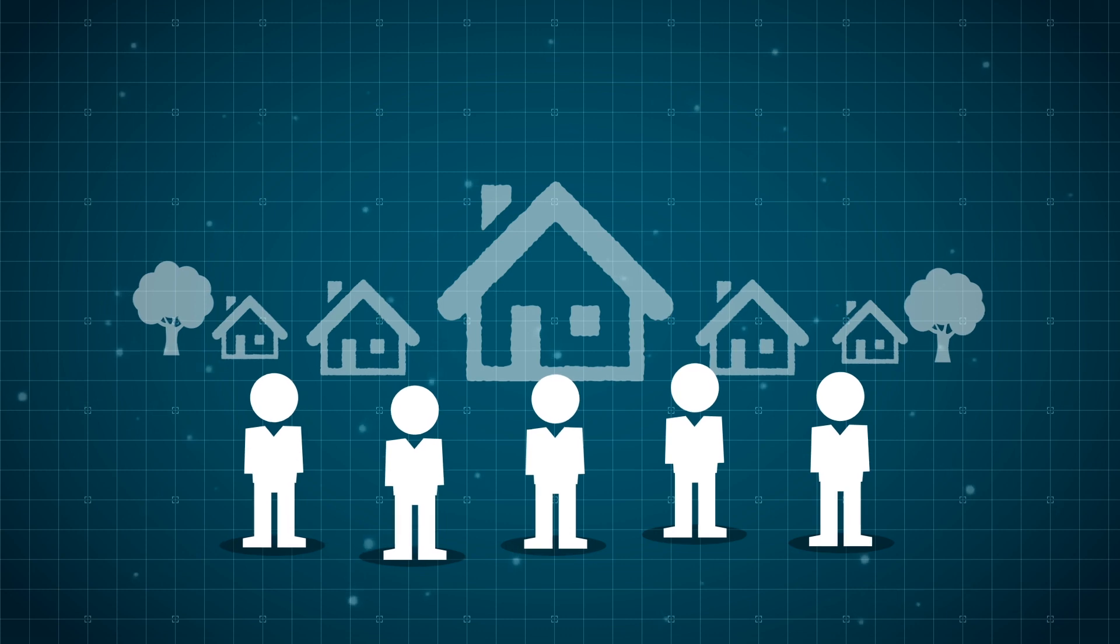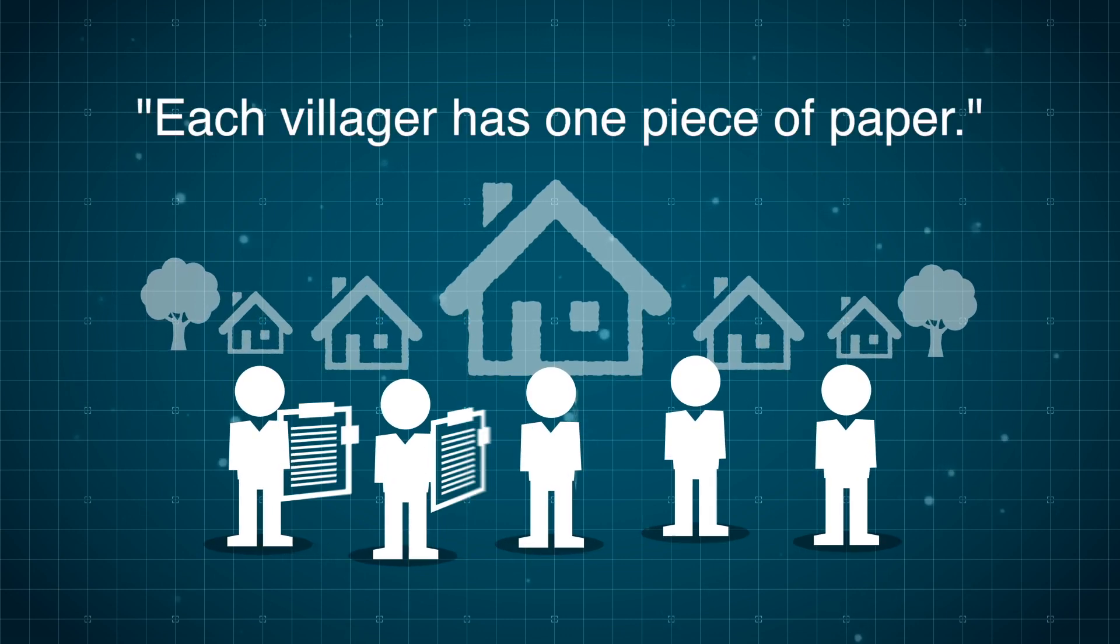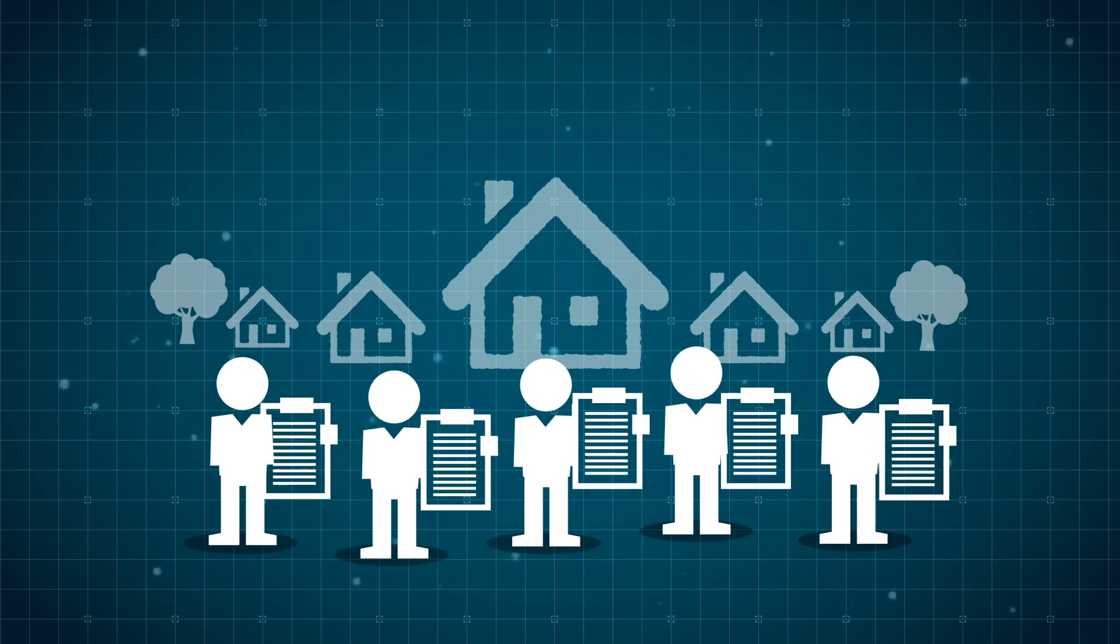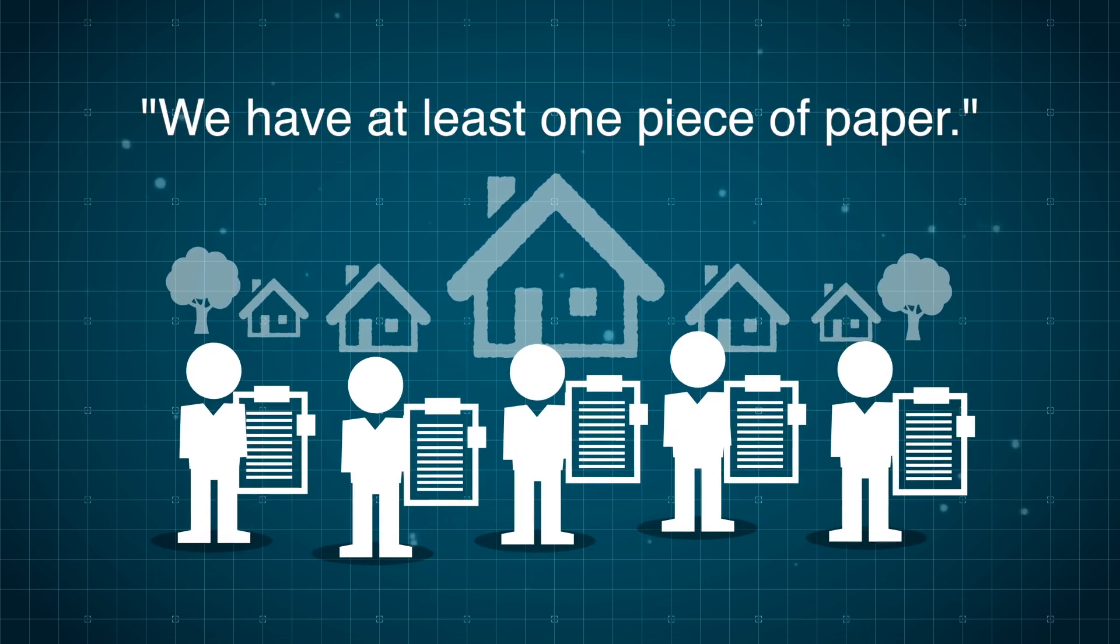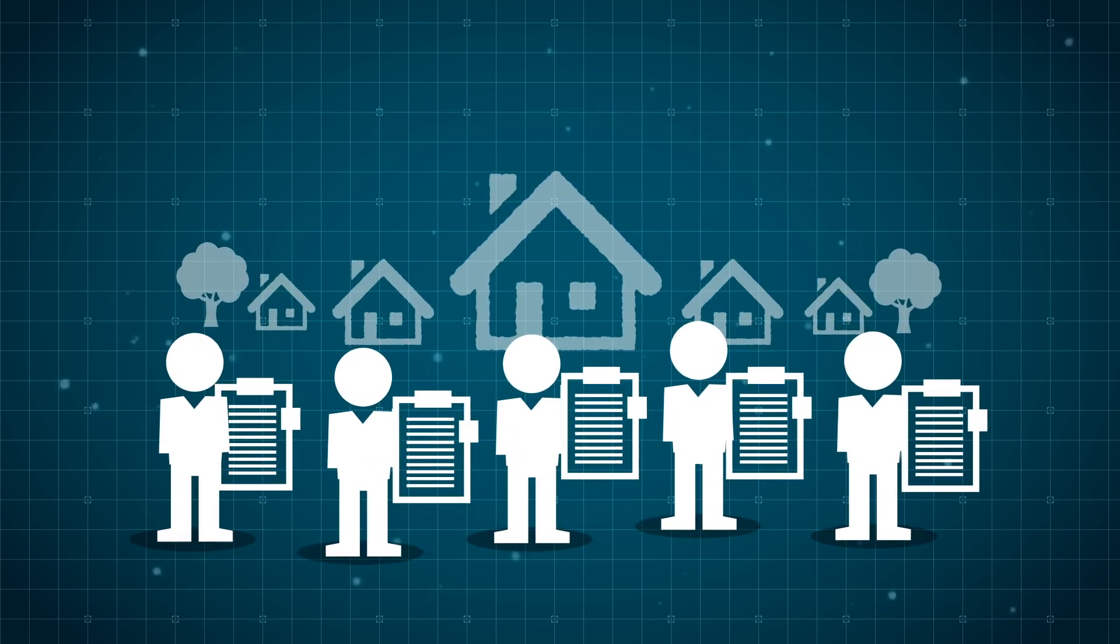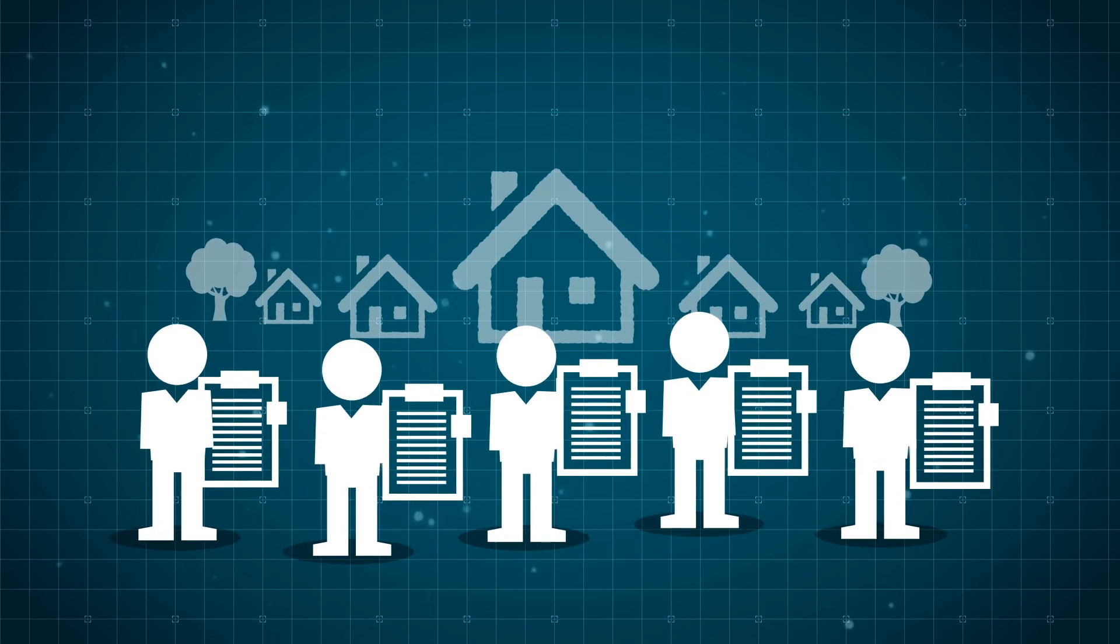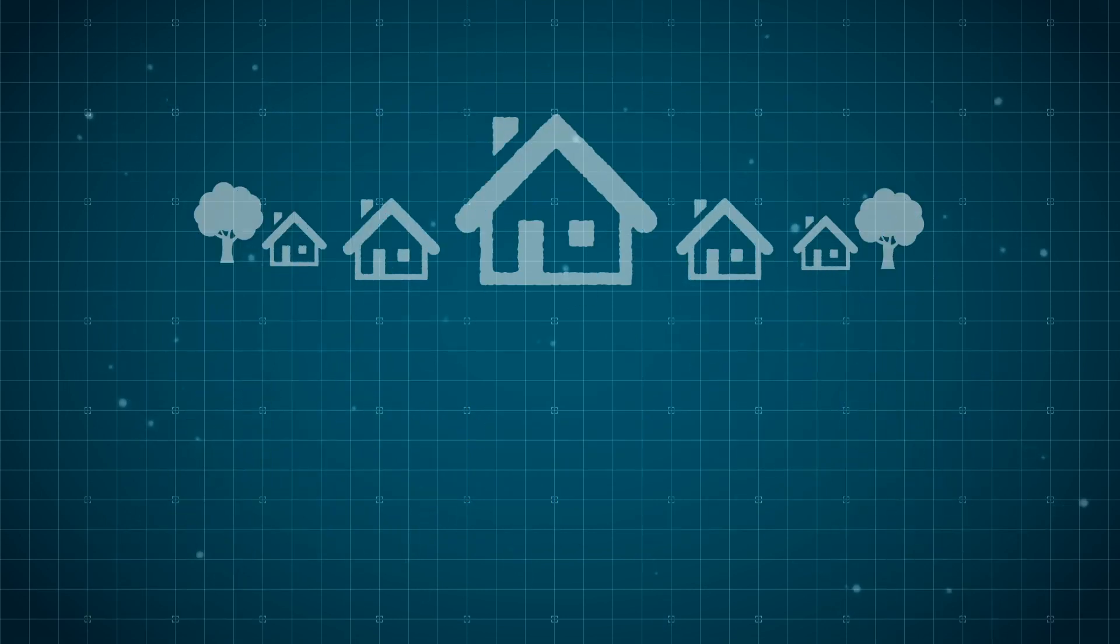We can use the statement 'each villager has one piece of paper' and combine it with our previous statement to show we have at least one piece of paper. That's essentially how our logic system works. Now let's apply this to a few more situations.